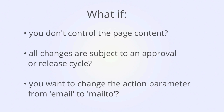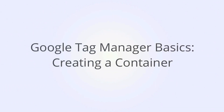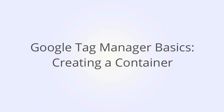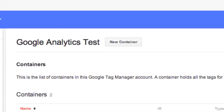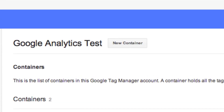This is where Google Tag Manager comes in. Our first step in Google Tag Manager will be to create a container. Once you've created your account at Google Tag Manager dot com, you need to create a container.